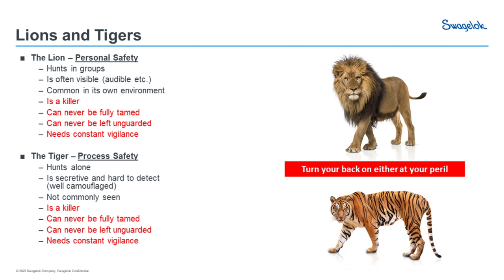This is the analogy I use when we train our field engineers. Lions and tigers — the lion hunting in groups is audible, they roar — very, very obvious. That's the kind of safety we're used to: slips, trips, falls, energy from a relief valve or vent valve. The tiger is process safety — it's secretive, it's camouflaged, it's what's lying inside that you can't see. If you mess around with either of them, it's probably not going to leave you in a very good way. But the lion is definitely the more obvious issue — a height risk or not wearing your PPE. The tiger is the stuff we don't see when we walk around these plants very obviously.